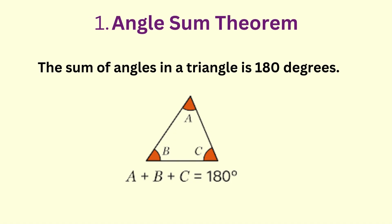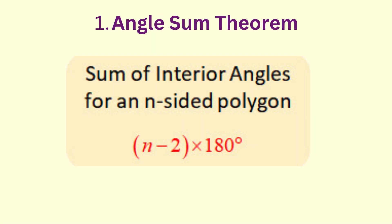First up, the angle sum theorem. This tells us that the sum of the interior angles of any triangle is always 180 degrees. For all polygons, the sum of the interior angles can be found using the formula n minus two times 180, where n is the number of sides.